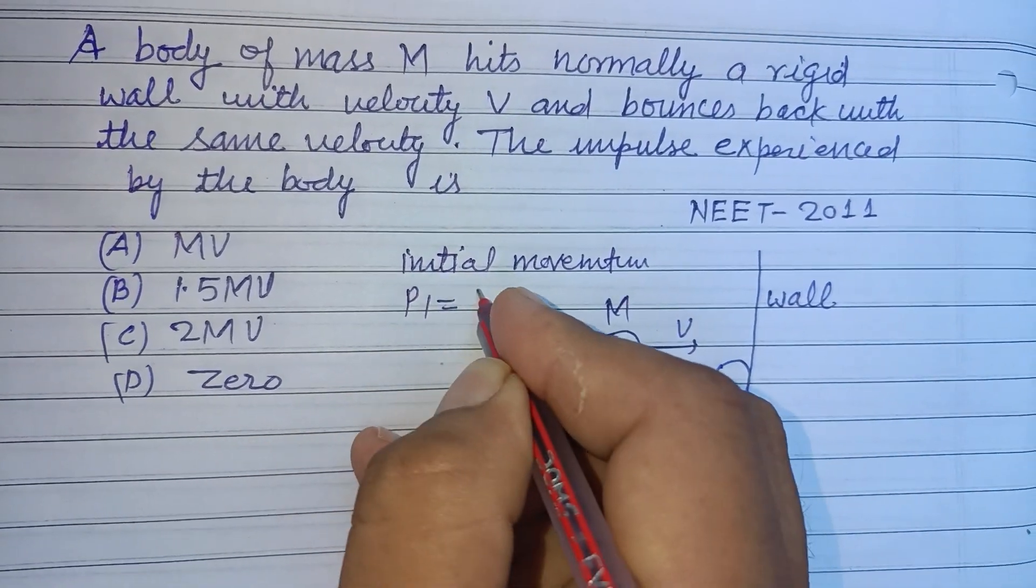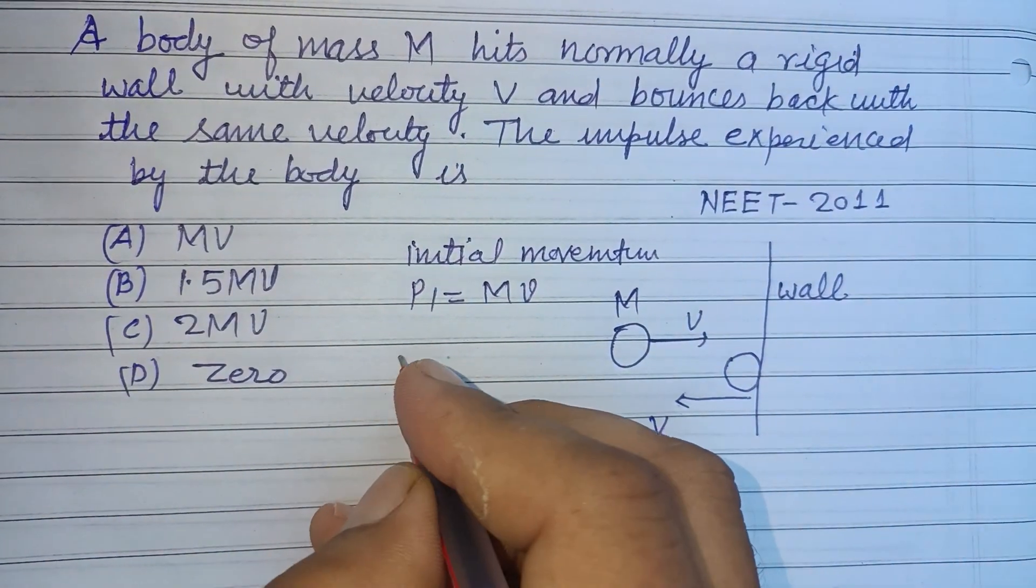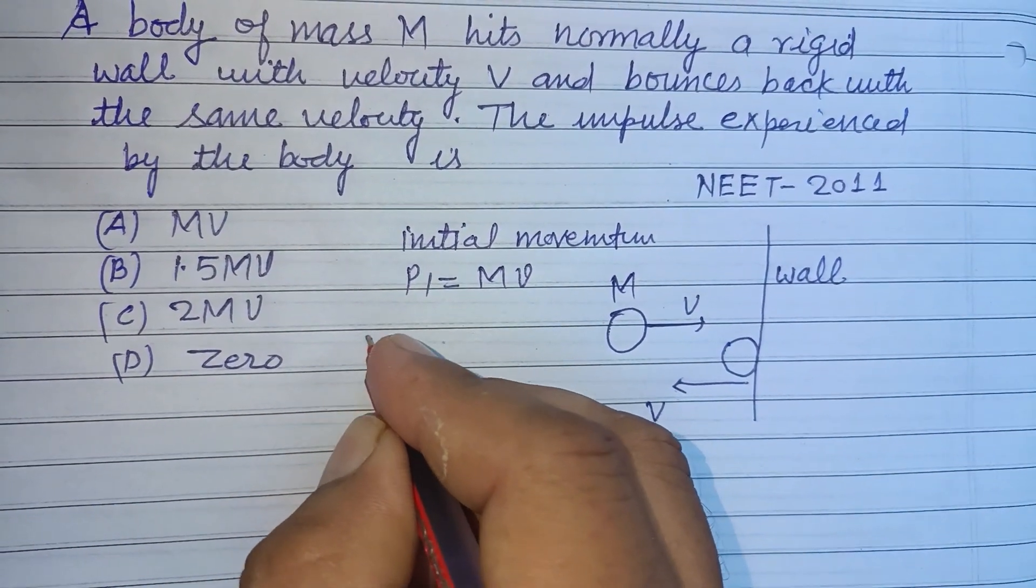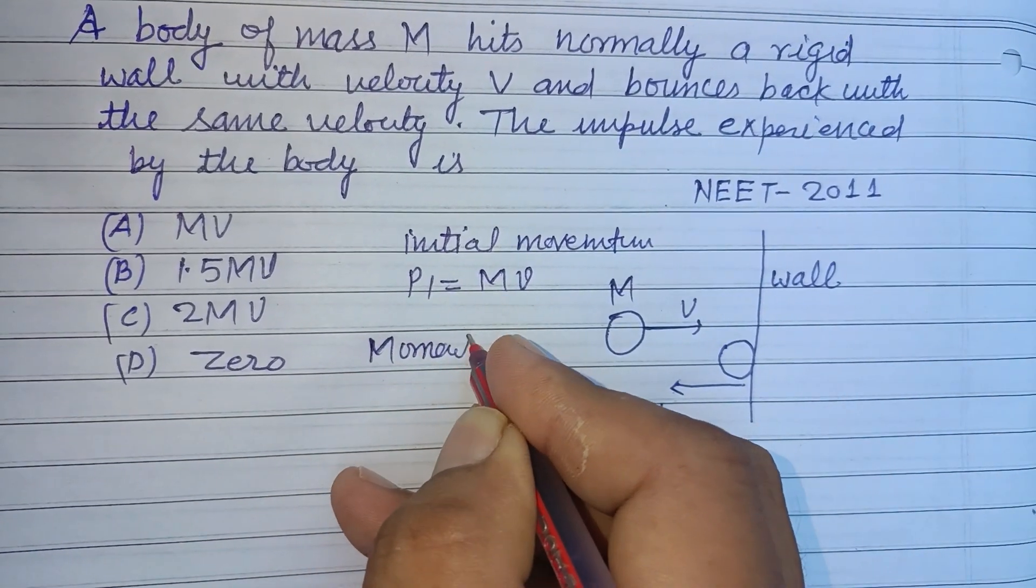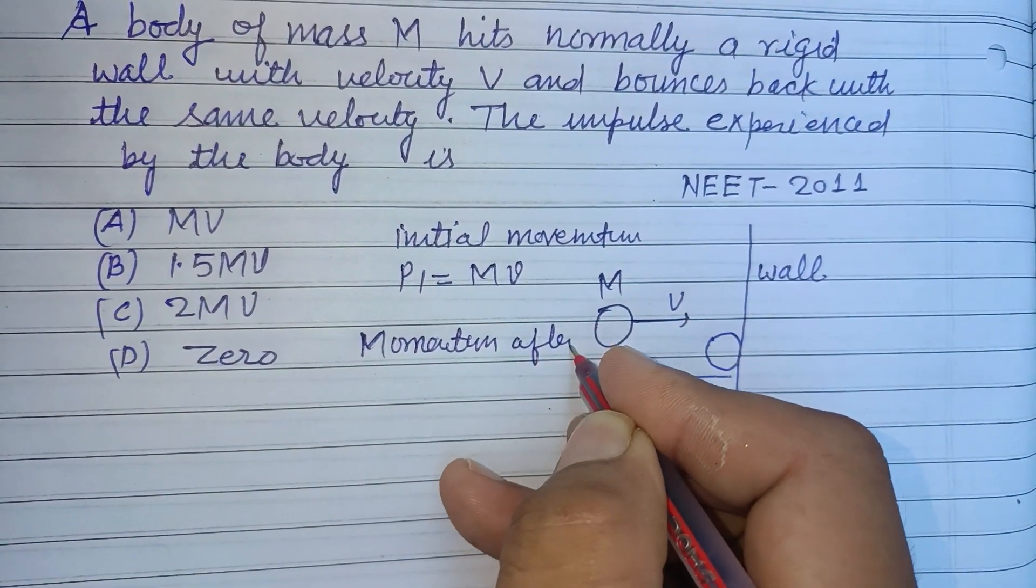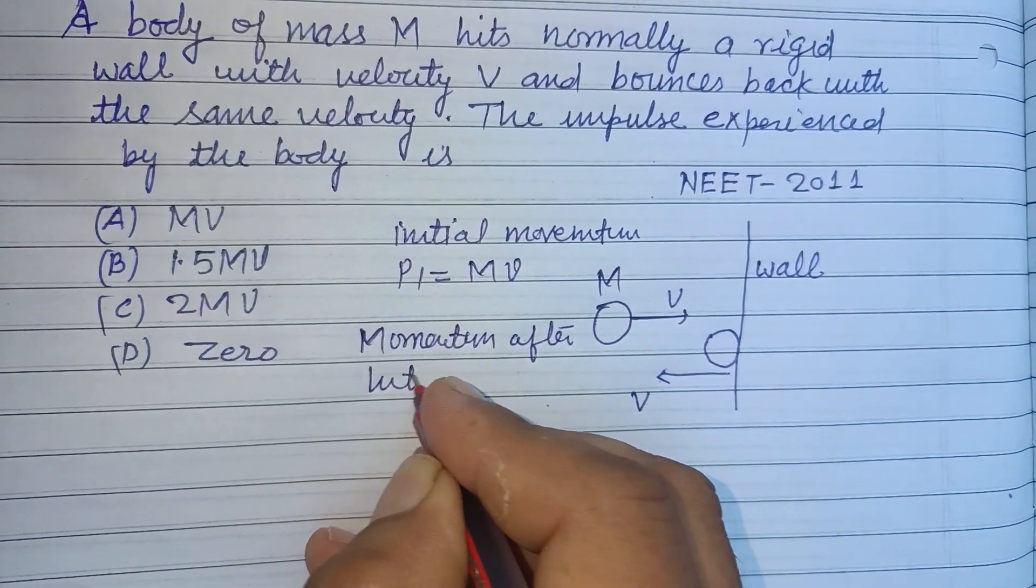Initial momentum P1 equals M into V. Momentum after hitting the wall...